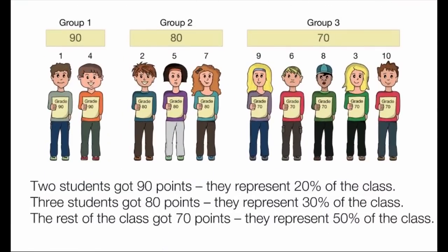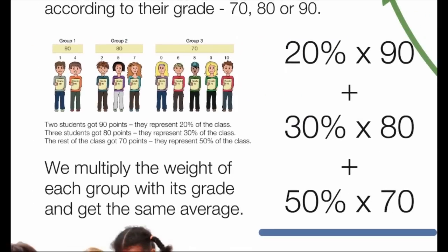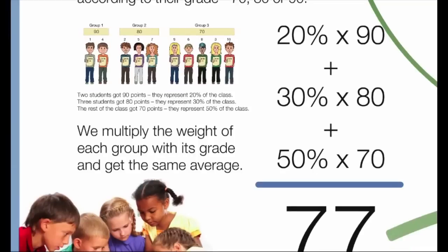Two students got 90 points. They represent 20% of the class. Three students got 80 points. They represent 30% of the class. The rest of the class got 70 points. They represent 50% of the class. We multiply the weight of each group with its grade and get the same average of 77.